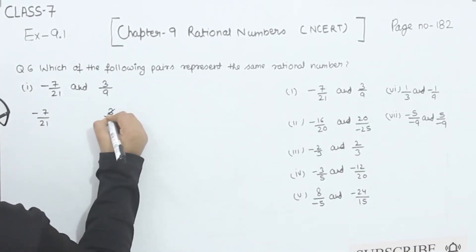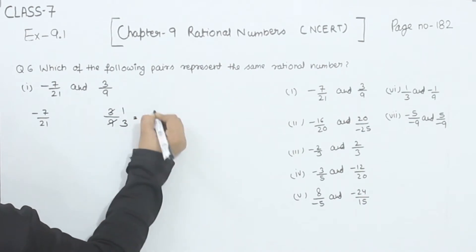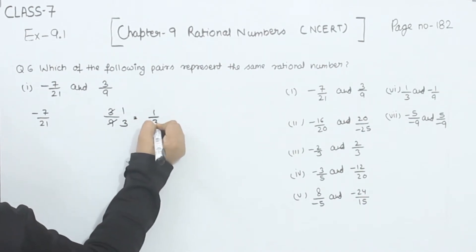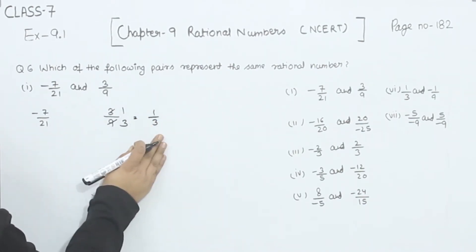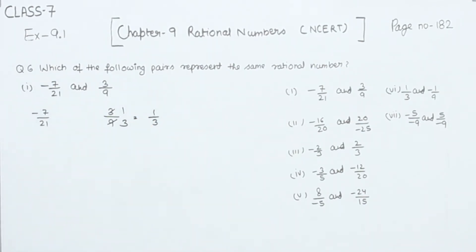For 3 by 9: 3 ones are 3, 3 threes are 9, so this simplifies to 1 by 3. This is the simplest form and it cannot be divided further.